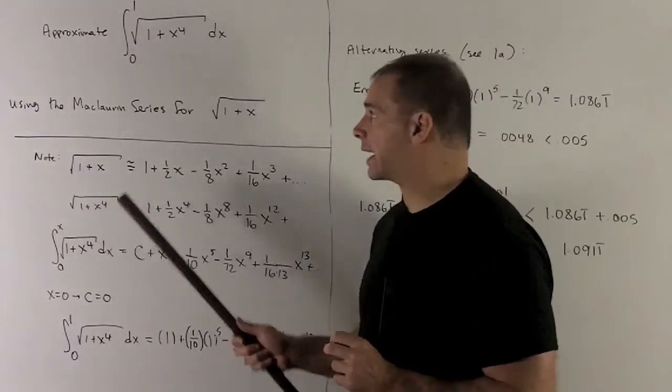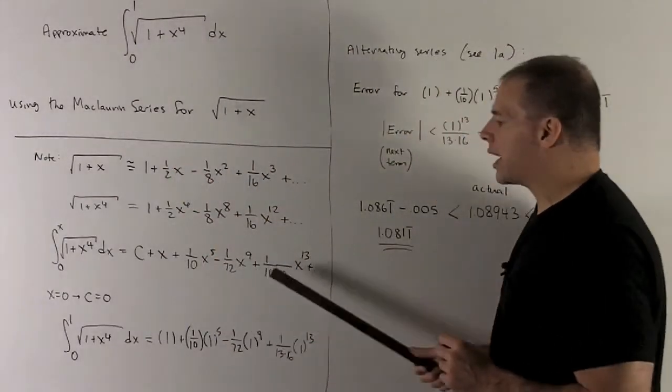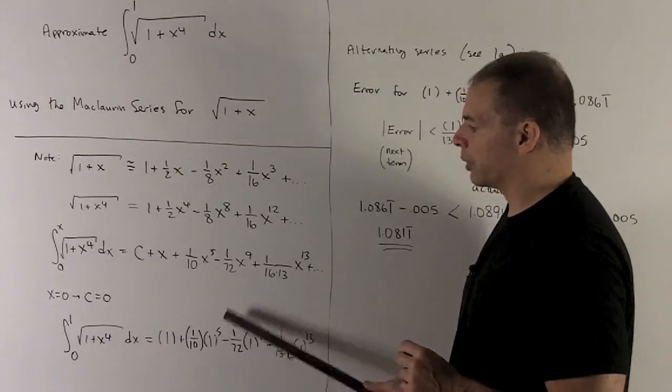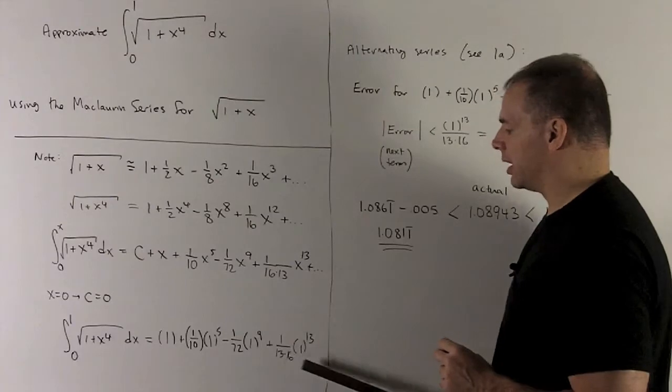Okay, so let's put in 1 for x, that's going to give us this, and then we'll notice on the other side, we're just getting 1 plus a 10th times 1 to the 5th minus a 72nd, 1 to the 9th plus, and so on.